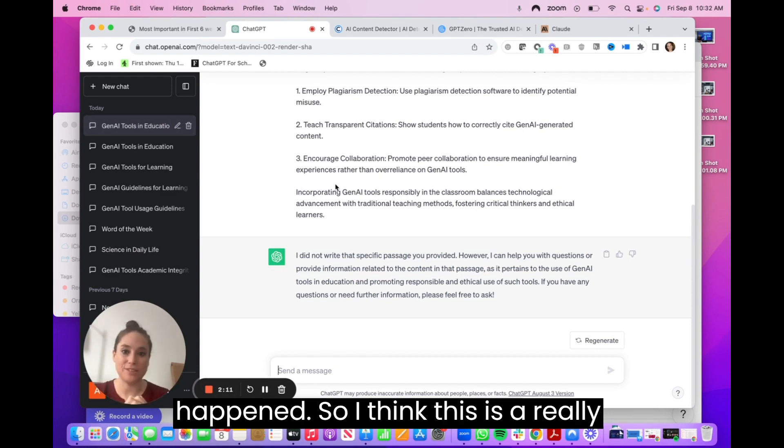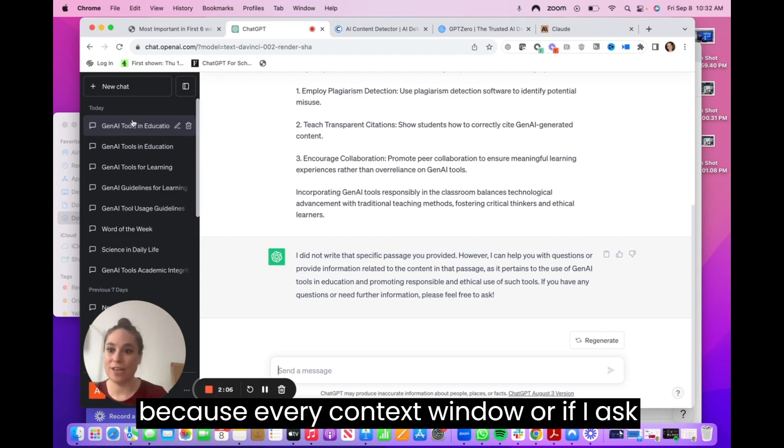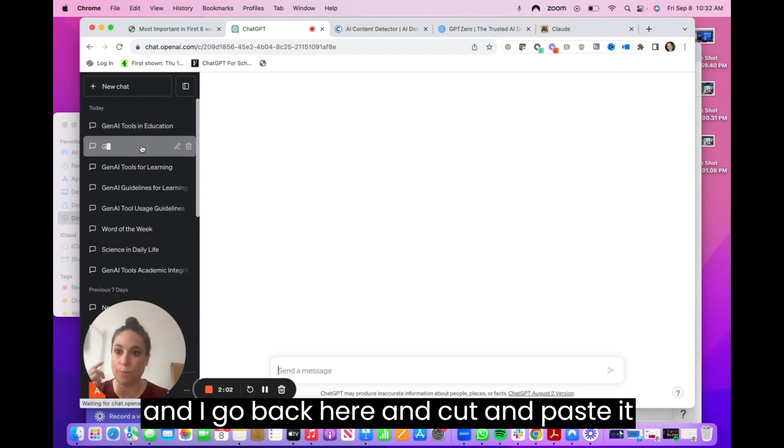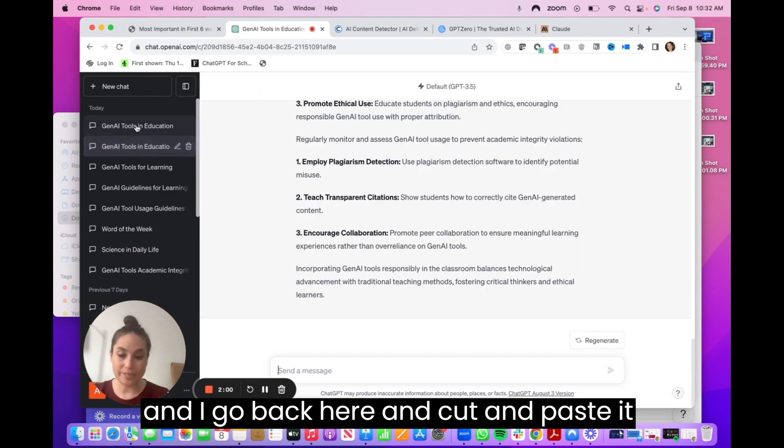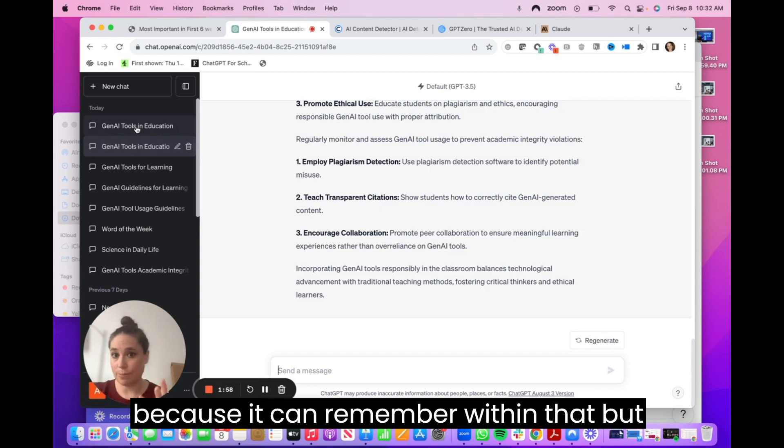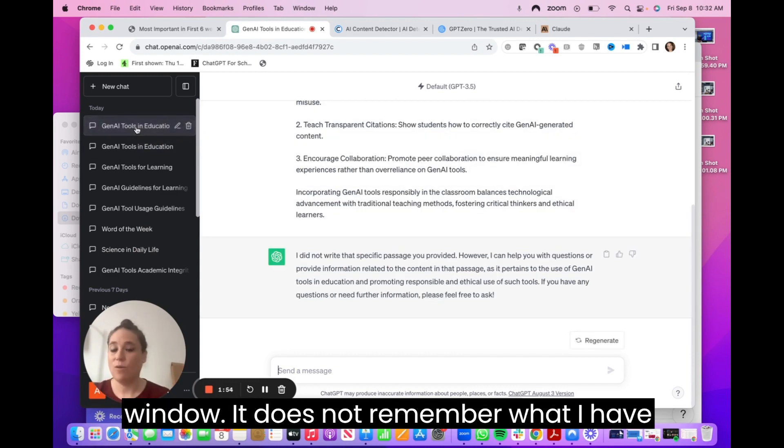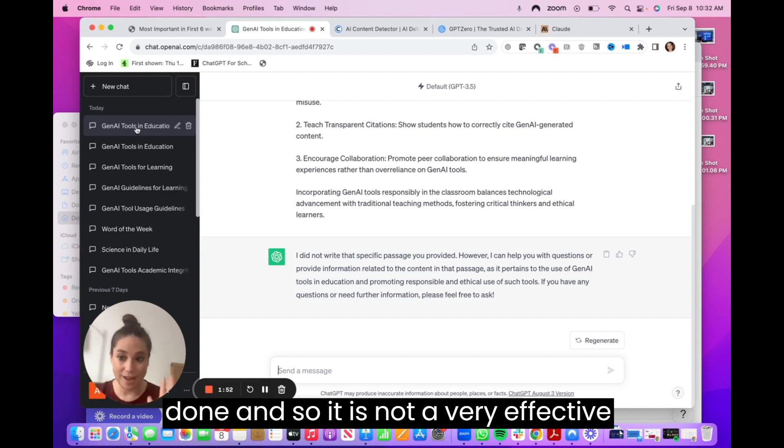So I think this is a really important crystallization that these tools cannot detect what's happening because every context window, or if I ask the same thing in the same context window, meaning I go back here and cut and paste it and ask if it wrote it, it'd say yes because it can remember within that. But as soon as I go out of that context window, it does not remember what I have done. And so it is not a very effective way. In fact, it's clearly incorrect.